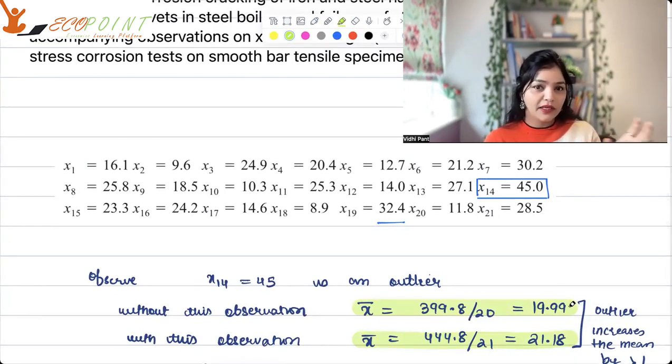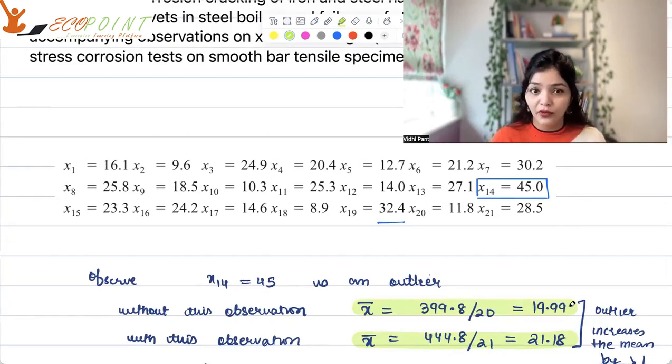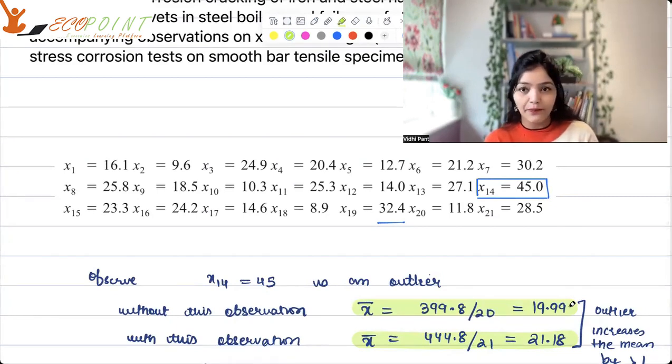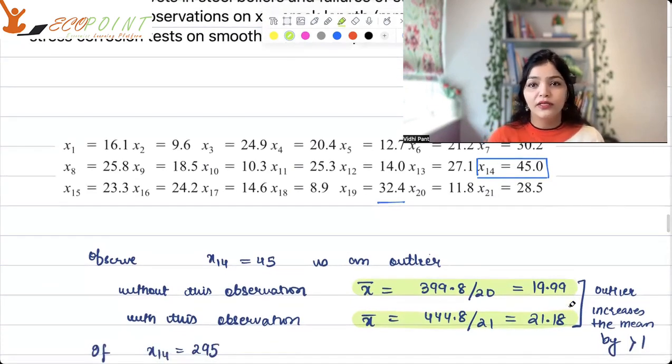You have an outlier, but it's different. You have 10s, 20s, then one observation is 32.4 and then suddenly 45. So, of course, it's an outlier and you can see this change, this outlier, you will see that outlier has increased the mean. The average of cracks has increased more than one unit.